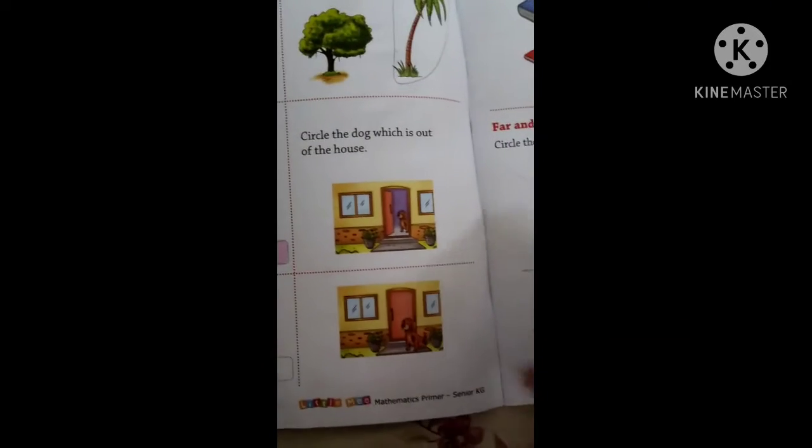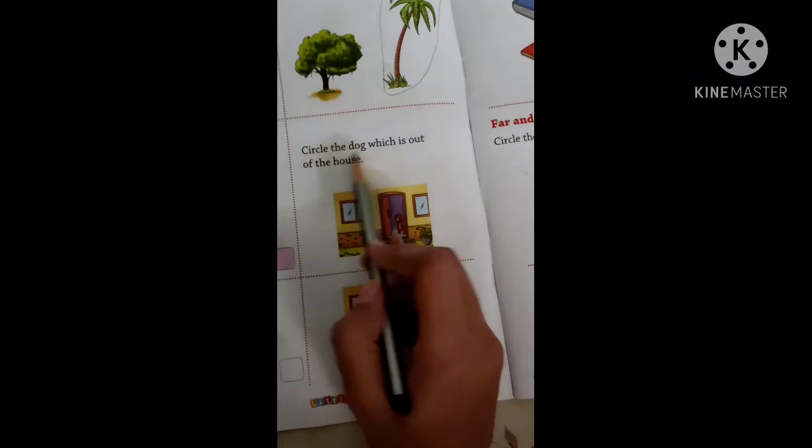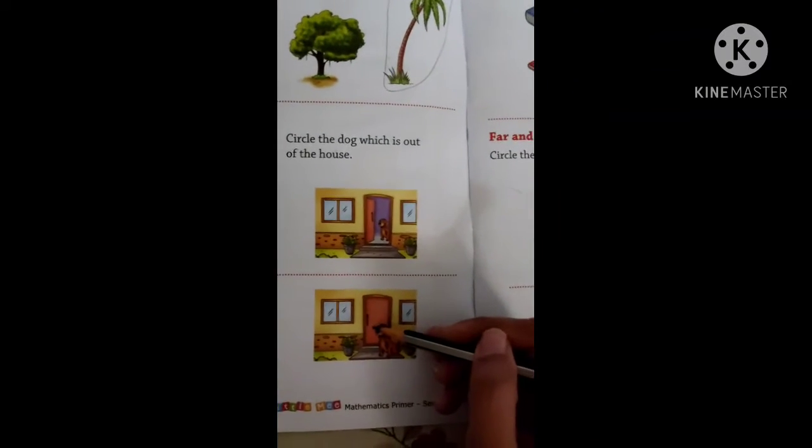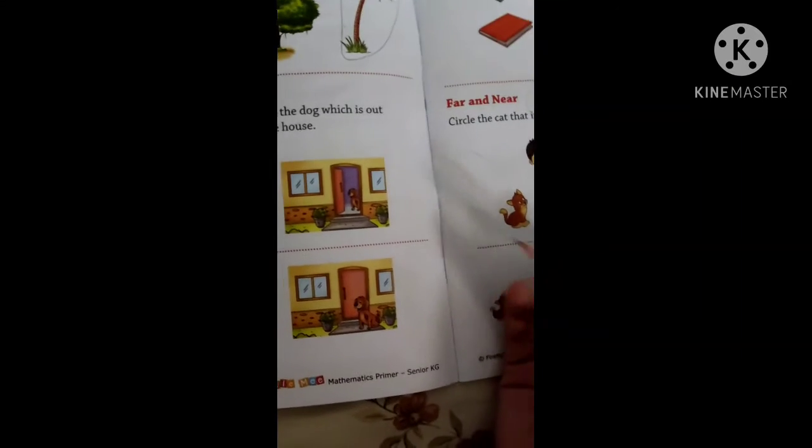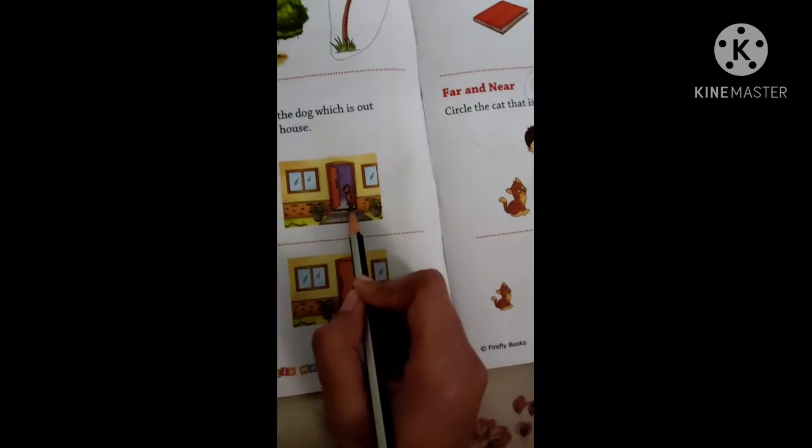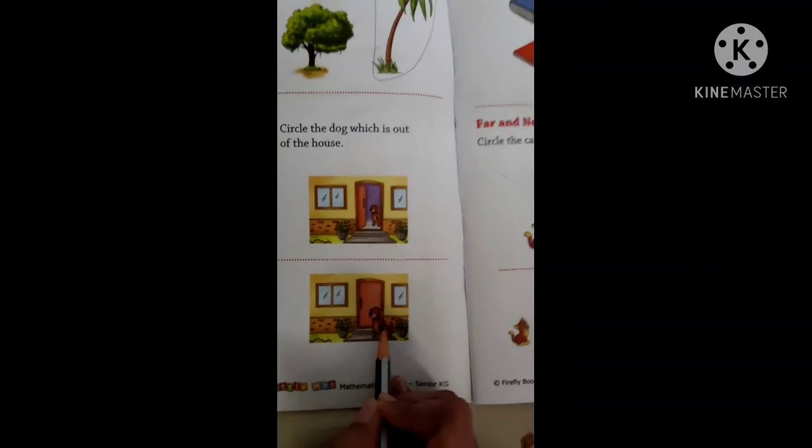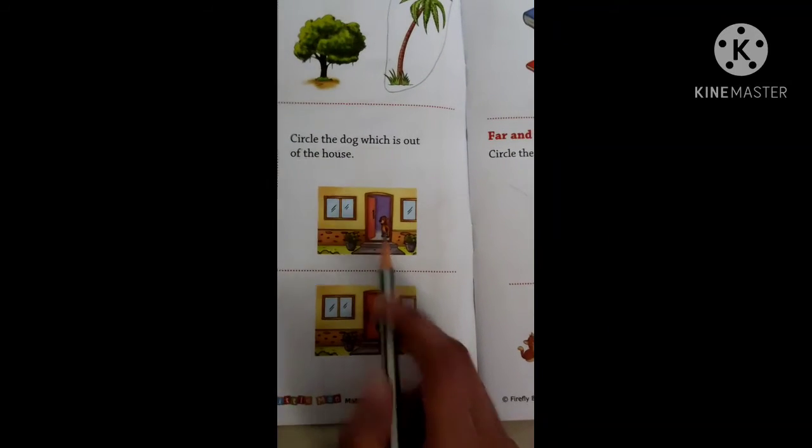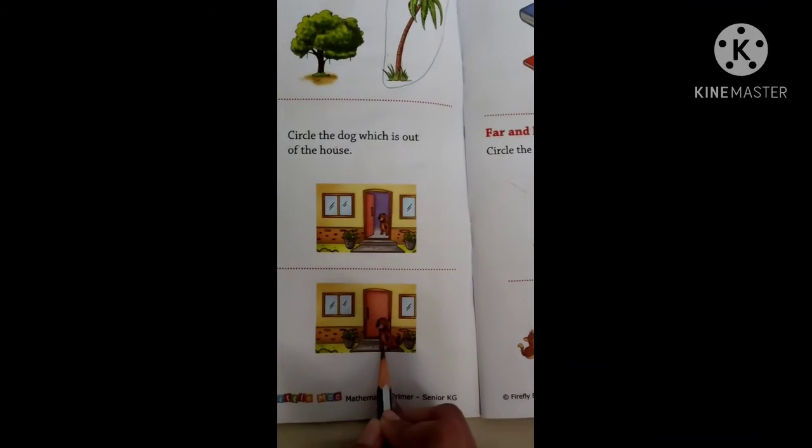Now children, come to the next. Circle the dog which is out of the house. You can see there are again two pictures given to you. In one, the dog is inside the house. And in one, the dog is outside the house. Here he is in the house. And here he is out of the house.